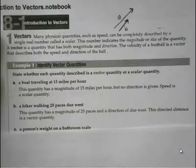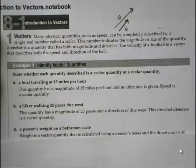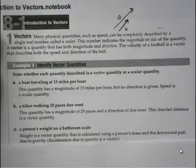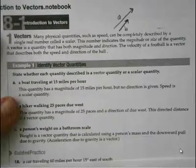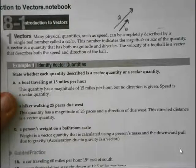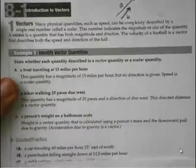A person's weight on a bathroom scale has both magnitude and direction — the direction would be down. This is a vector. Weight is a vector quantity calculated using a person's mass and the downward pull due to gravity. Acceleration due to gravity is a vector. A car traveling 60 miles per hour 15 degrees east of south has magnitude and direction, so this is a vector. A parachute falling straight down at 12.5 miles per hour has magnitude and direction, so this is also a vector.